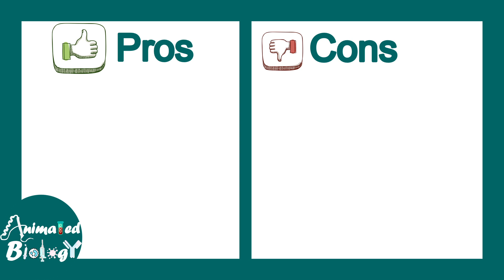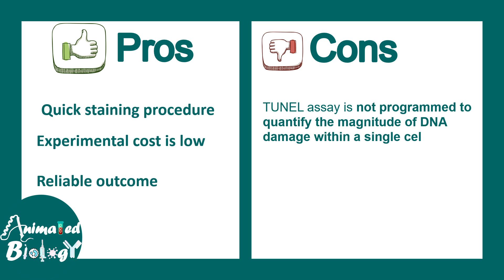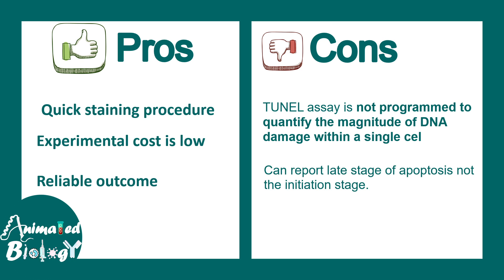There are several pros and cons of this technique. It is very quick, the staining procedure is fairly simple, experimental cost is low, and it has reliable outcomes. However, the TUNEL assay is not designed to understand the magnitude of DNA damage in a single cell — there could be immense or minimal DNA damage, and the stain gives a yes-or-no type answer without indicating magnitude. It can also only report the late stage of apoptosis, not the initiation phase.